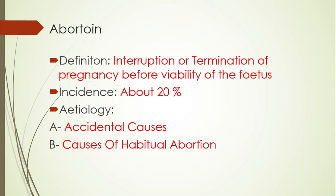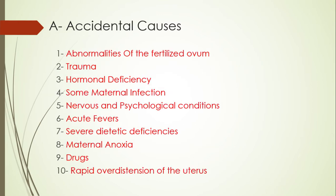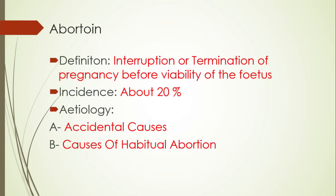Abortion is a very important subject. We will discuss the definition, the incidence, and the etiology. Definition of abortion means interruption or termination of pregnancy before viability of the fetus. We say interruption or termination — not just termination — because in some cases the pregnancy may continue in spite of abortion, like in threatened abortion. Threatened abortion is a type of abortion but the pregnancy continues. The incidence is about 20%.